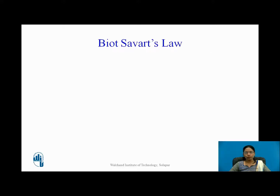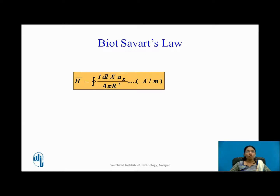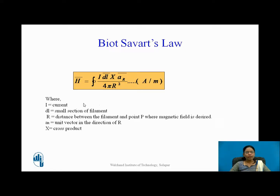Biot-Savart's law can be given as H-bar is equal to the closed line integral of I dL-bar cross aR-bar upon 4π r². The unit of magnetic field intensity is amperes per meter, where I is current, dL is a small section of the filament, aR-bar is the unit vector in the direction of r-bar, and r is the distance between the filament and the point P. The symbol in between is a cross product, not simple multiplication.